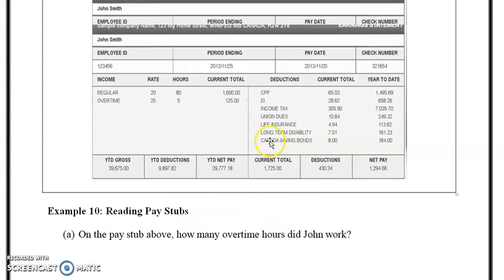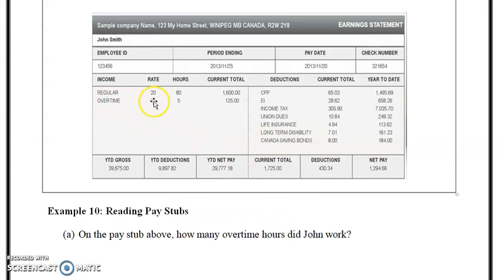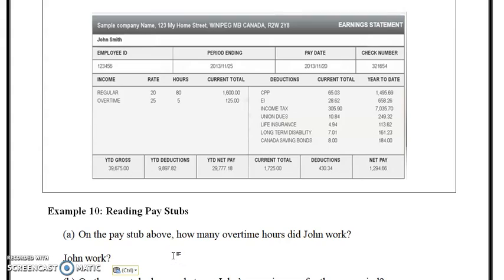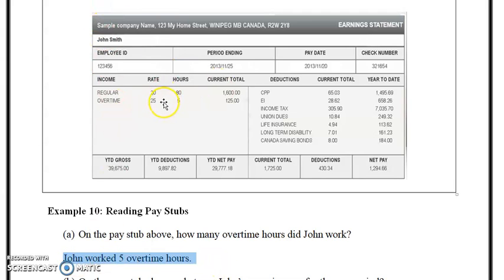So reading pay stubs: on the pay stub above, how many hours of overtime did John work? You can see it's overtime at a rate of $25 per hour for five hours. John worked five overtime hours.